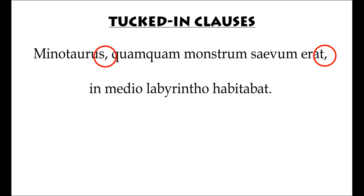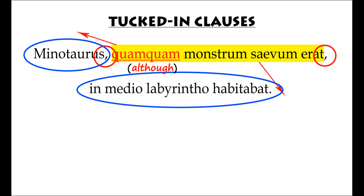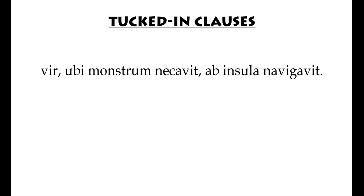Let's have a look at these two examples. So what have we got here? We've got the two commas there, and there's your conjunction, the quamquam. This means 'although.' So with the tucked-in clause, you can either take it out and bring it to the front — although it was a savage monster — or you can push it to the end and start with this bit here. So what you might have come up with is: the Minotaur lived in the middle of a labyrinth, although he was a savage monster. I think the first one sounds better.